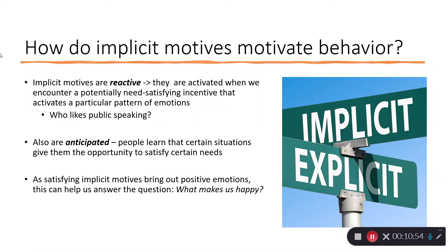People lower in need for power probably don't have those same positive emotions around public speaking. Implicit motives are also anticipatory — we learn that certain situations give us an opportunity to satisfy certain needs, so we can anticipate feeling positive when we enter them. Satisfying implicit motives brings out positive emotions and helps us answer the question of what makes us happy. Next up, we're going to talk about the specific implicit motives, starting with achievement motivation.